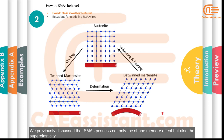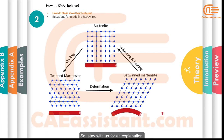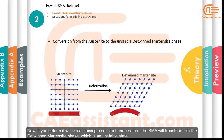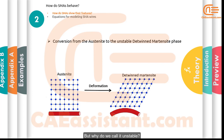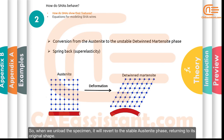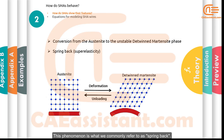SMAs possess not only the shape memory effect but also superelasticity. Imagine you have a shape memory alloy stable in the austenite phase. If you deform it while maintaining a constant temperature, the SMA will transform into the detwinned martensite phase, which is an unstable state. Since the temperature has not changed during deformation, when you unload the specimen, it will revert to the stable austenite phase, returning to its original shape — this is commonly referred to as spring back.